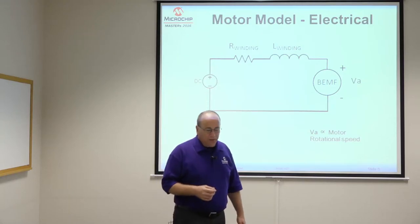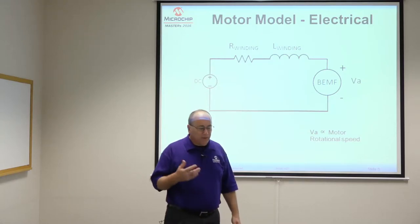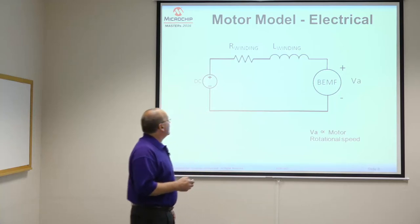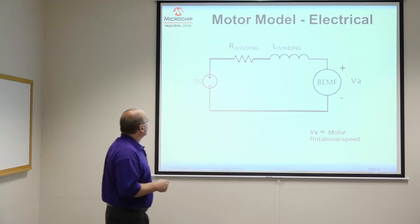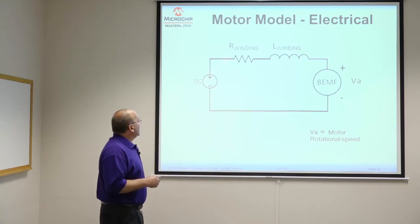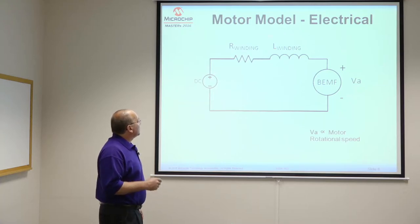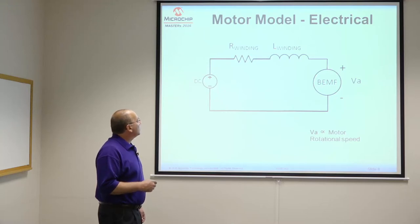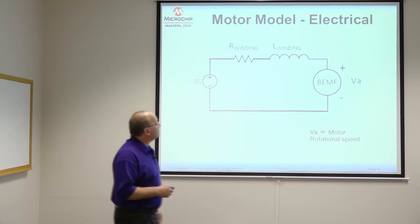Here's an example of a very simple motor model to get a better understanding of how it operates. There's a DC source that supplies voltage to the terminals of the motor. Inside the motor, you have the winding resistance and its inductance. Once the motor is spinning, it generates a back EMF voltage which opposes the applied voltage at the terminals.